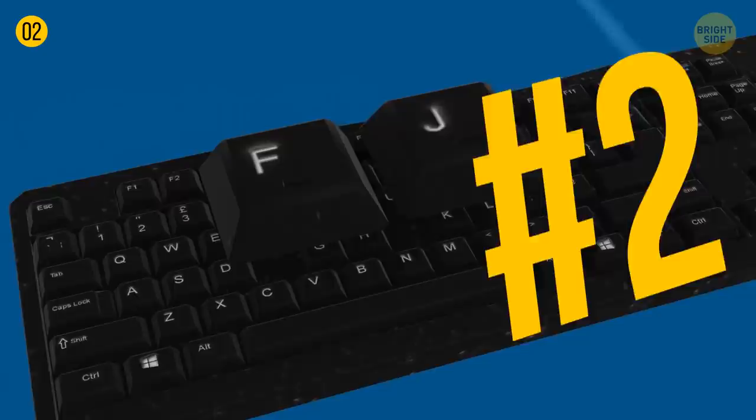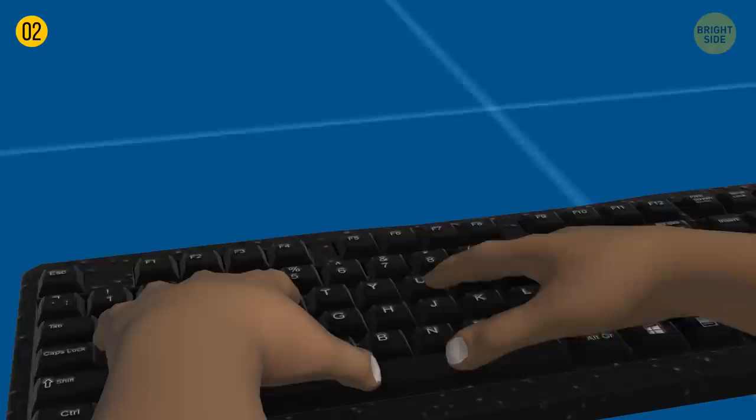These tiny ridges on the letters F and J on a keyboard help us find the correct keys while touch typing. Also, since they're located in the center, they indicate the optimum position for typing.